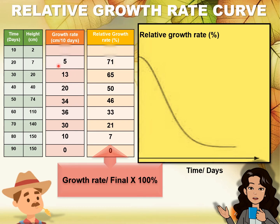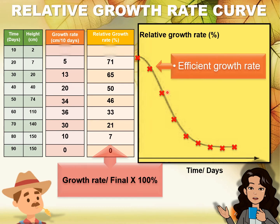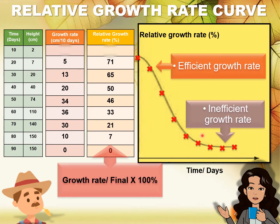For another example, on day 30, the growth rate was 13 cm. We divide by the actual height on day 30, which was 20 cm, times 100, and you get 65%. As you keep on calculating, you have enough data to plot your graph. When we connect the points, you get a declining graph where the initial part declines very quickly. These parts show efficient growth rate in the plant, but as we reach the bottom of the graph, it started to decline slowly. This part is where the growth rate has become inefficient. So the purpose of a relative growth rate curve is to help us identify when the growth rate was most efficient.